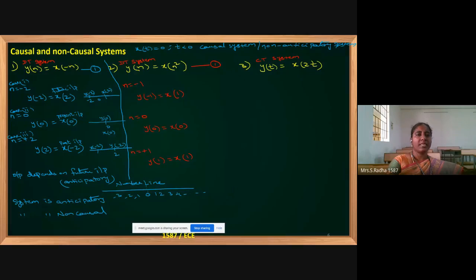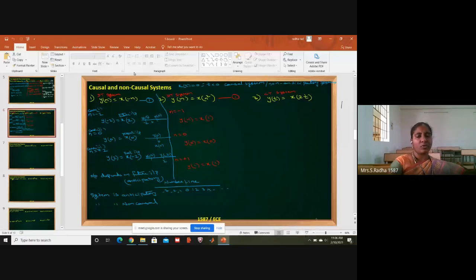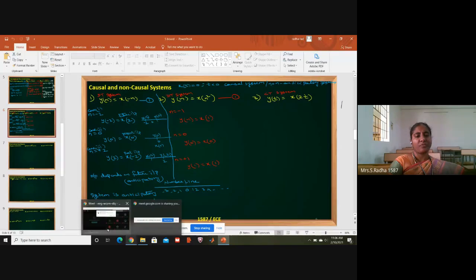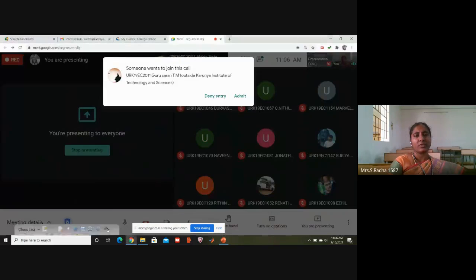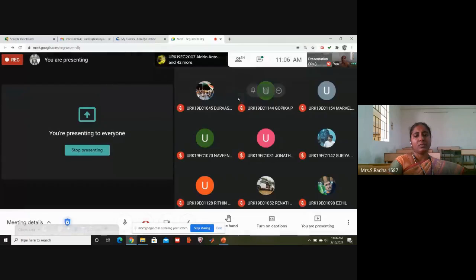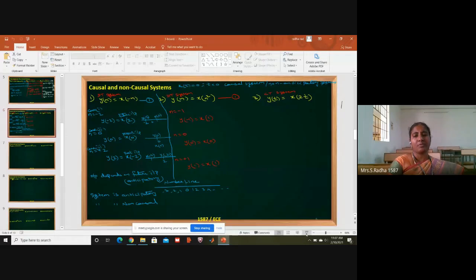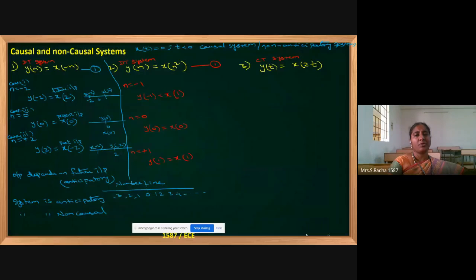This is a discrete time system. The equation is y[n] = x[n]². We have to consider one positive value, one negative value, and one zero value for the independent variable. The time variable is n in a discrete time system.